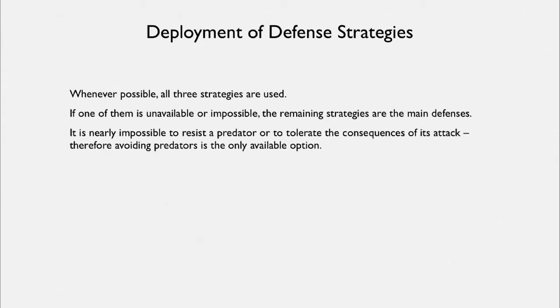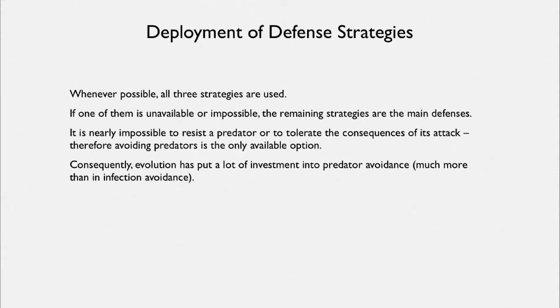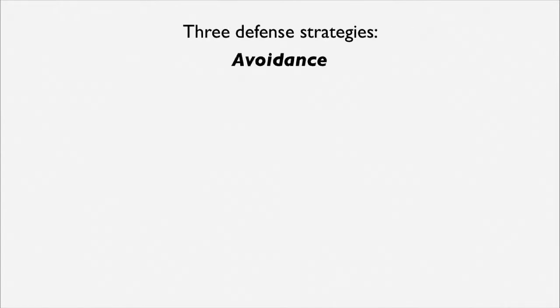However, if you manage to get away from one, then something like tissue repair is going to kick in. So evolution has actually put a lot of investment into predator avoidance, and much more investment in that than in the avoidance of infections, because infections can be dealt with by the other strategies.